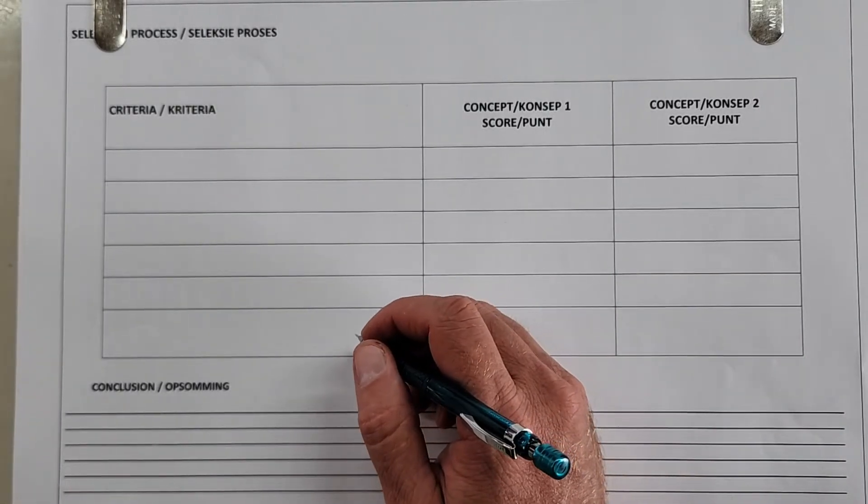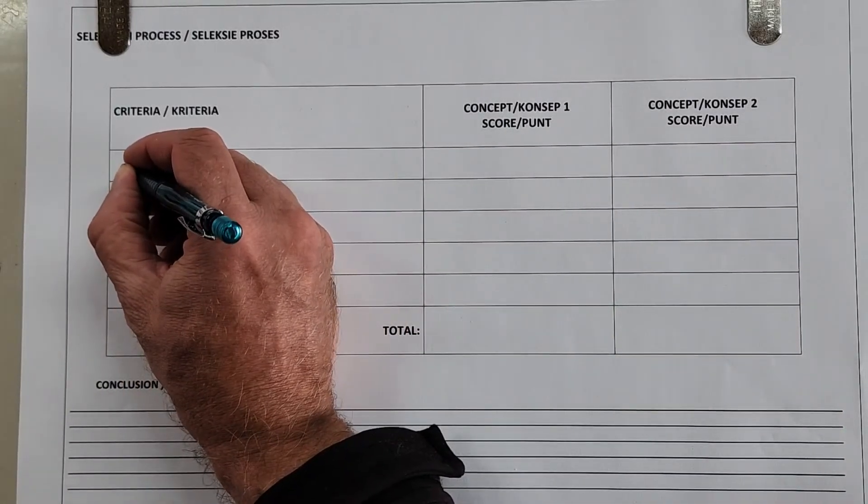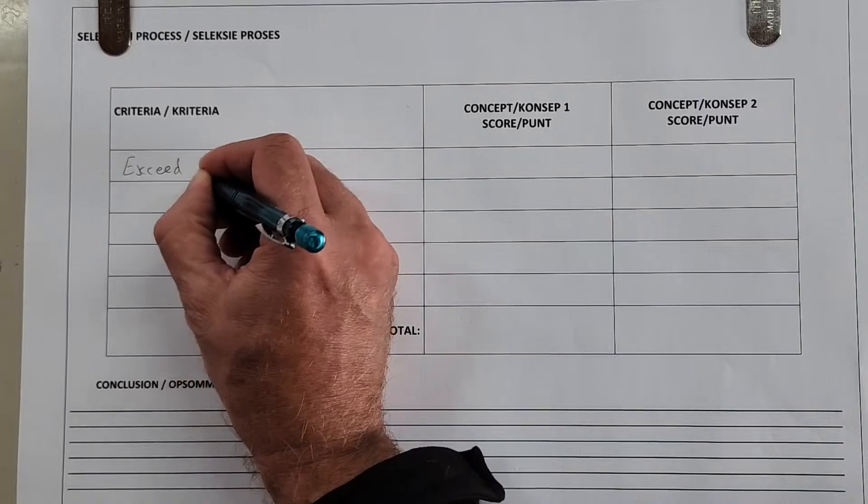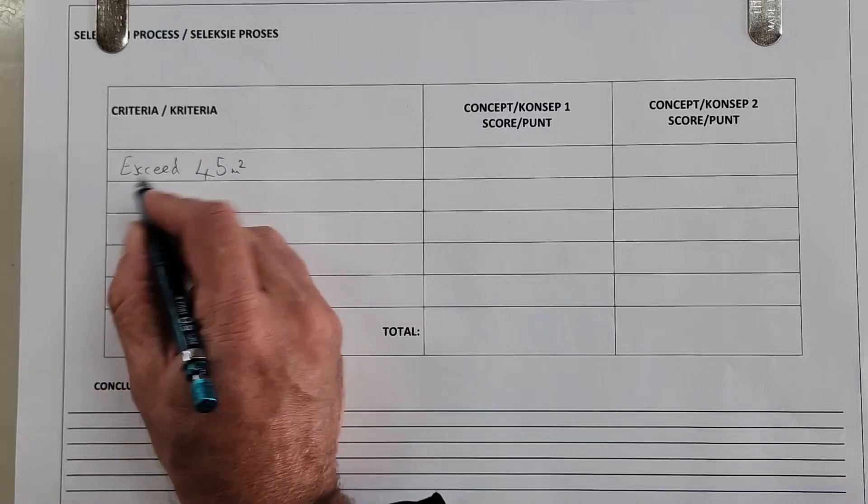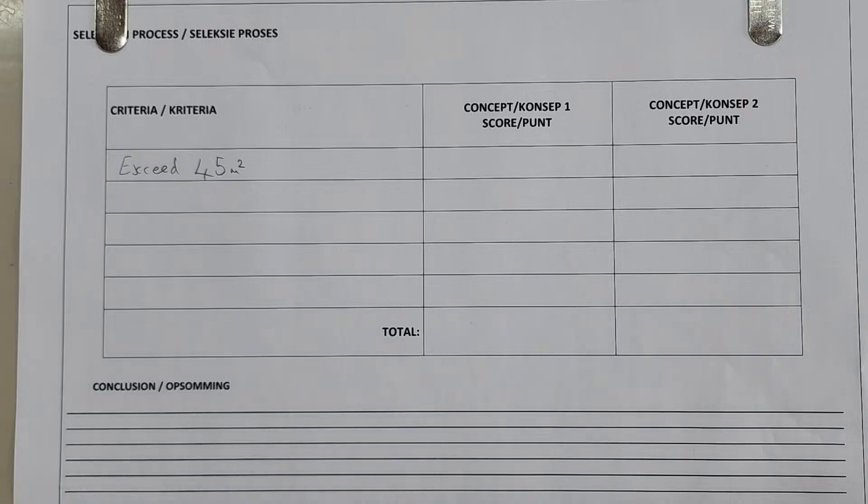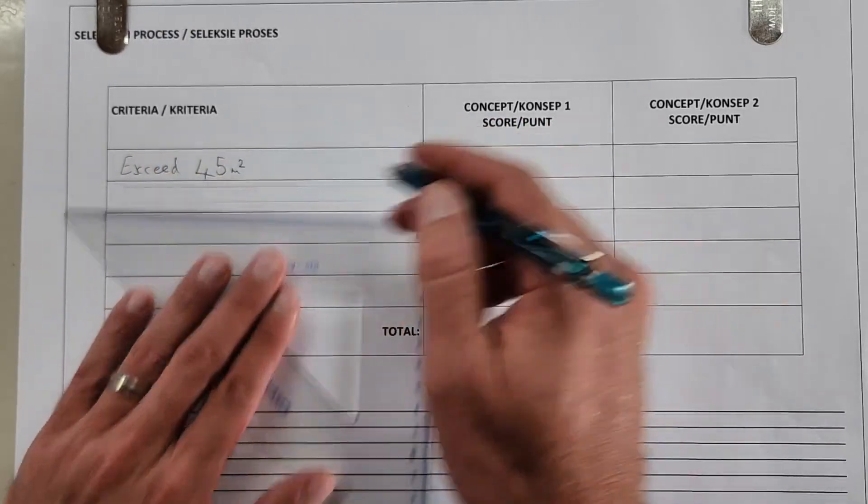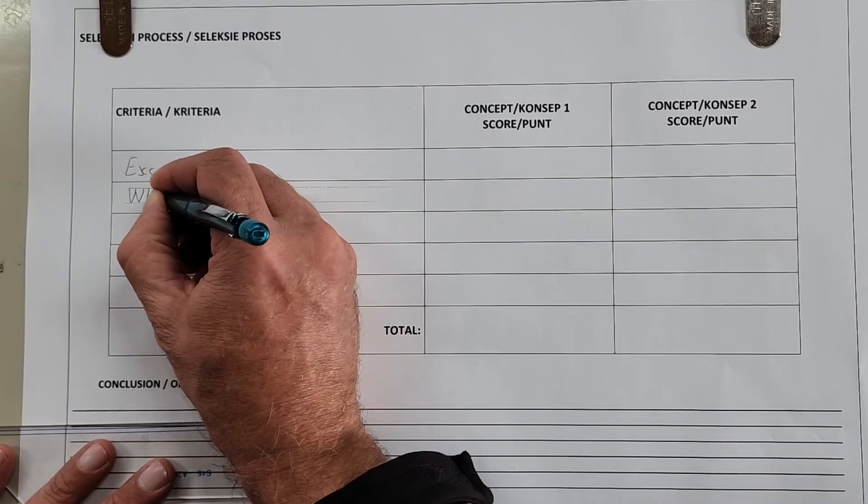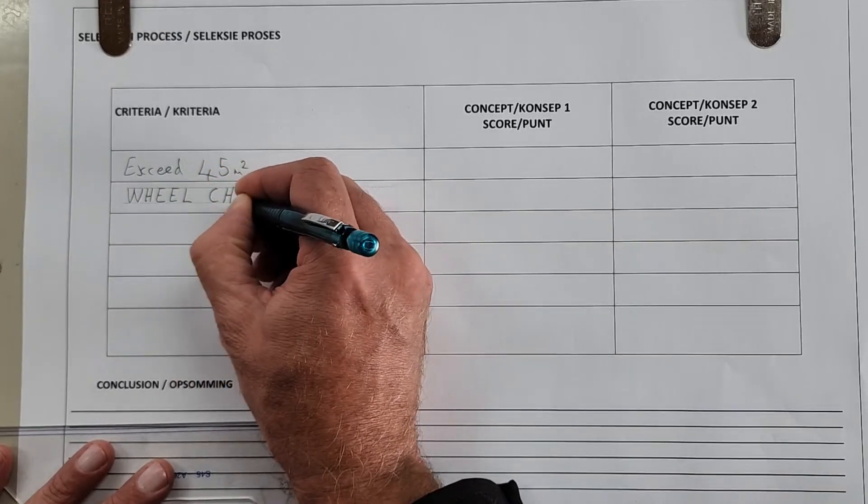The title of this page is 'Selection Process.' In the pack that I've given you, you have to come up with five criteria, and we are going to give a score for each concept. So here's concept one, concept two, we're going to give a score and we are going to have a total here in the end that tells us which one scored higher, and we're going to conclude with a conclusion.